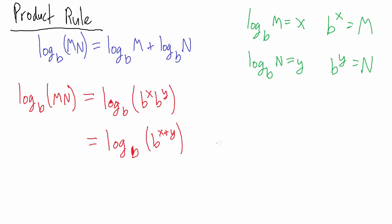Now, from a property covered in a separate video, the base b log of b to the r equals r. Here r is the expression x plus y, but that doesn't matter — if you take the base b log of b to any expression, you just get that expression back. So the base b log of b to the x plus y equals x plus y.